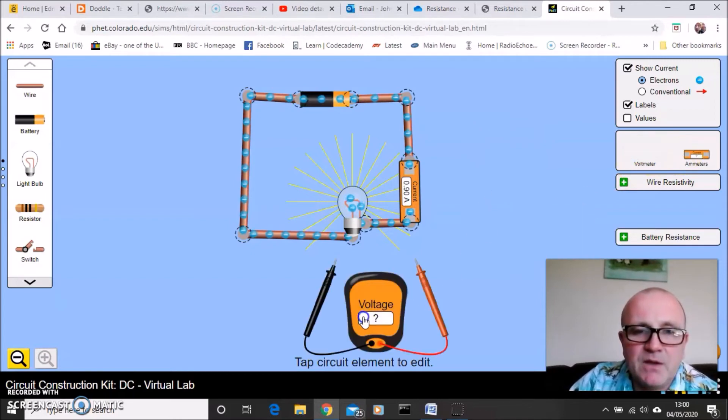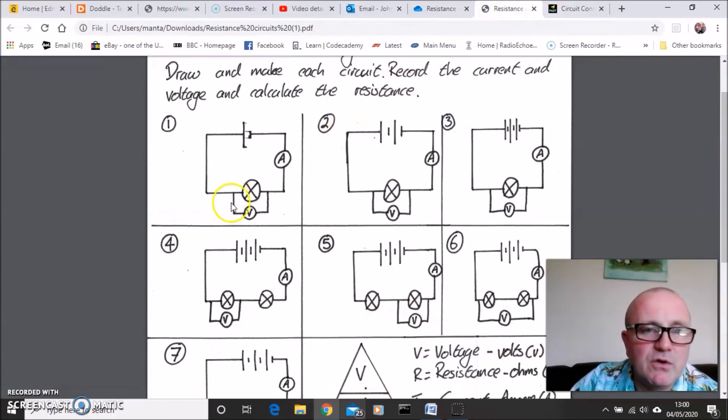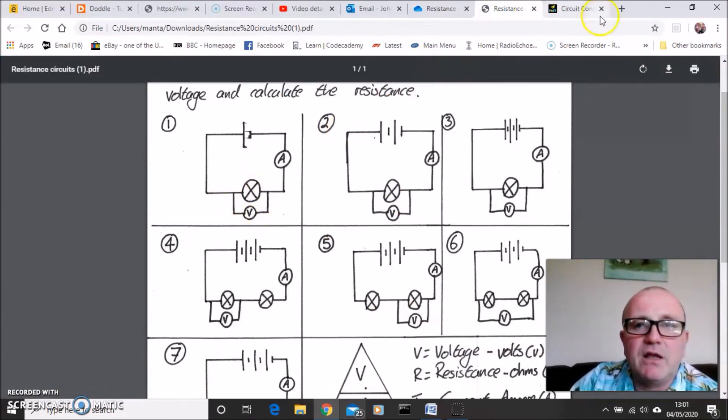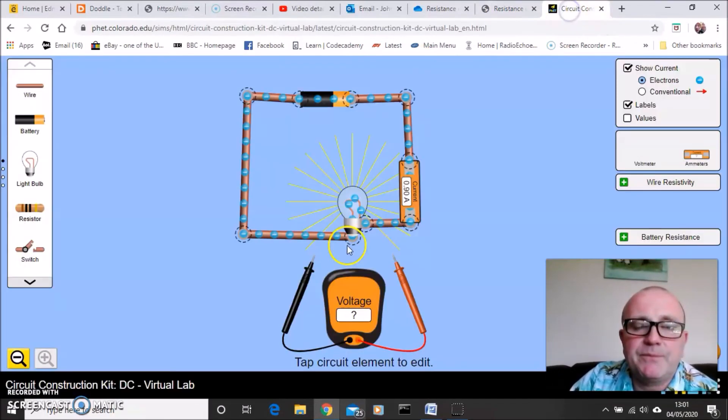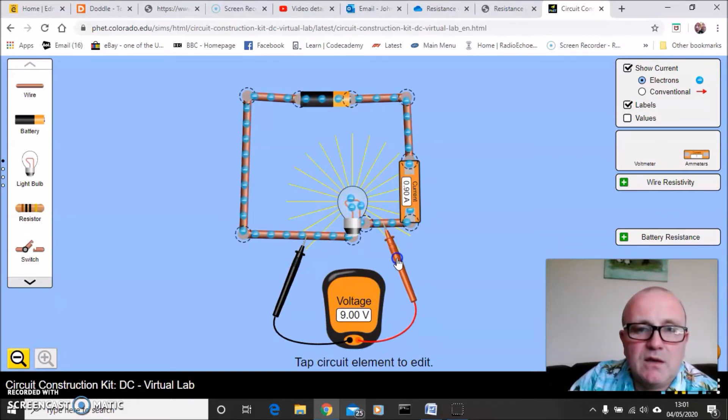Let's get my voltmeter. Let's drag that onto the circuit. Because if you remember, look, we've got our voltmeter in parallel to our bulb. Let's just add that one there. And there we go.